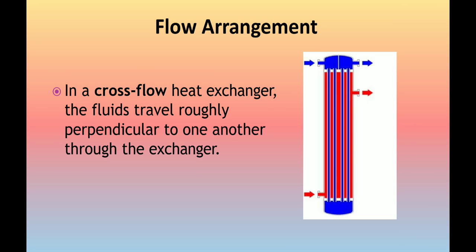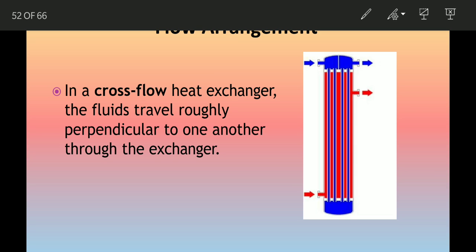The next flow arrangement is cross flow. In cross flow, the fluids travel roughly perpendicular to one another through the exchanger. As you can see in the diagram, the hot flow enters from one side and the cold flow enters from the perpendicular side. The hot flow exits from the perpendicular direction. That is why it is called cross flow.